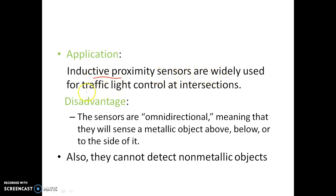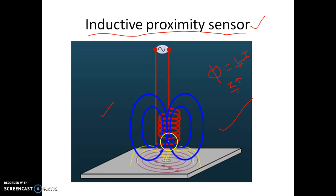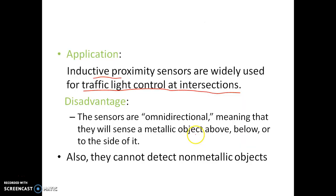Inductive proximity sensors are widely used for traffic light control at intersections. This type of sensor is buried into the road surface. All cars are made up of metals, so when a car travels over the road, the sensor buried in the road surface detects the metal of the vehicle. Since eddy current only generates in metal and never in non-metal, this sensor can be used to detect metallic cars. This is a very important application.